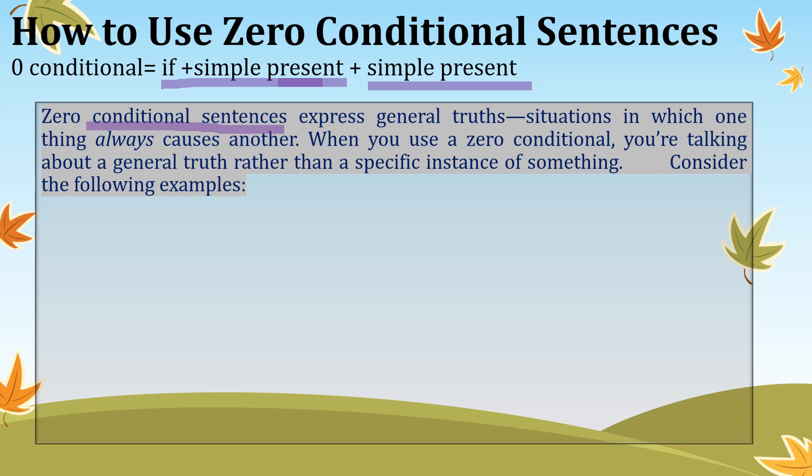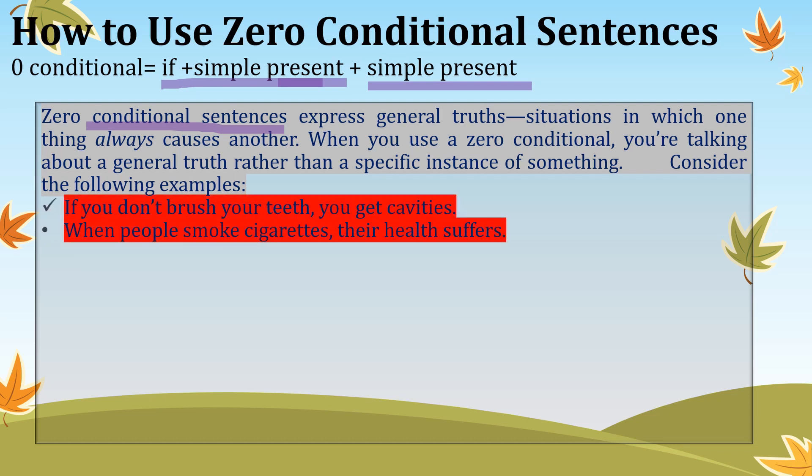Zero conditional sentences express general truths — situations in which one thing always causes another. You are talking about general truth rather than a specific instance. For example: if you don't brush your teeth, you will get cavities.